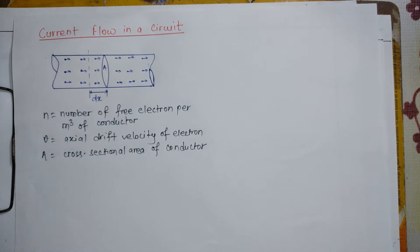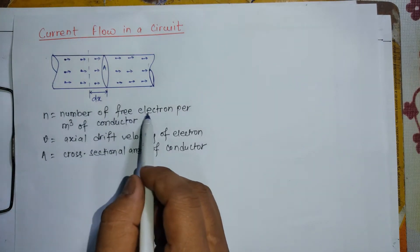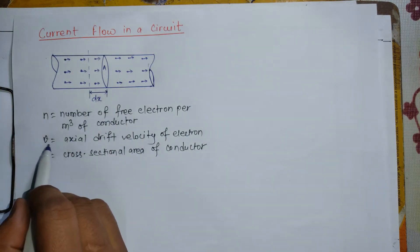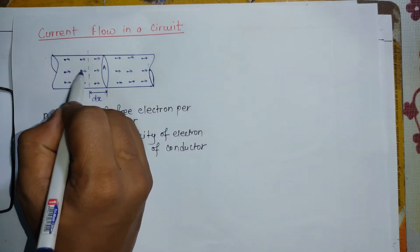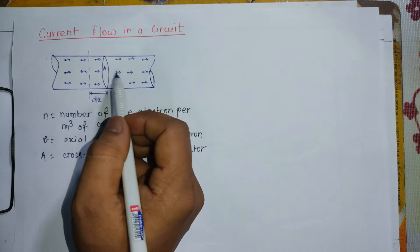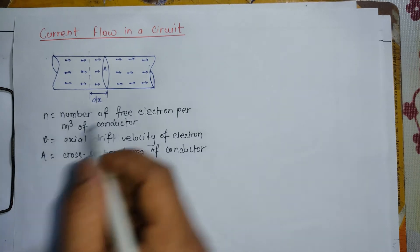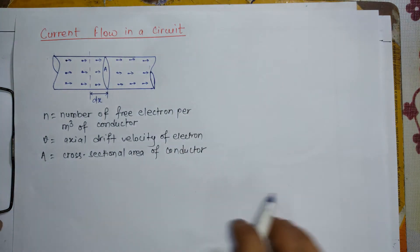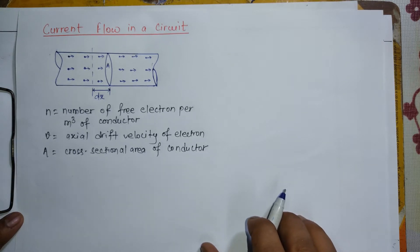Let's consider this figure. First, n is the number of free electrons per unit volume. This is the axial drift velocity of the electron. The electron will move in a certain direction — this is the drift velocity of the electron. This small v is the conductor's cross-sectional area A, and this is the current density of the electron.